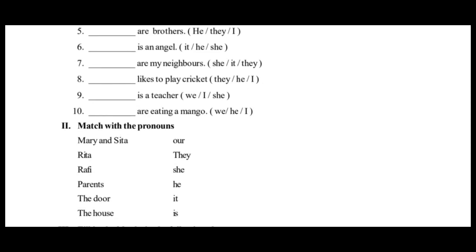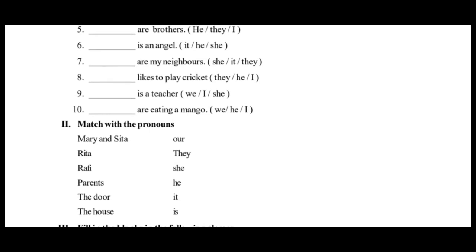Ninth one: 'Dash is a teacher.' We is a plural pronoun — wrong. I is followed by am — wrong. So the right answer is she is a teacher. Tenth one: 'Dash are eating a mango.' Here the plural pronoun we shall be used. We are eating a mango.